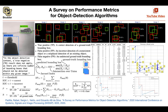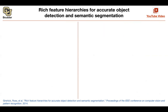Now that we know how to compare our algorithms together, let's move on to the next one, which is one of the first papers that actually tried to use deep learning and convolutional neural networks to solve this problem — detect objects.